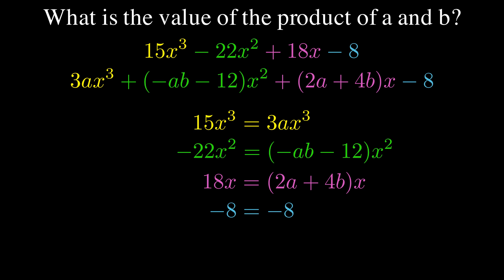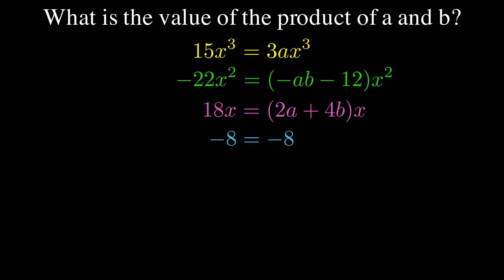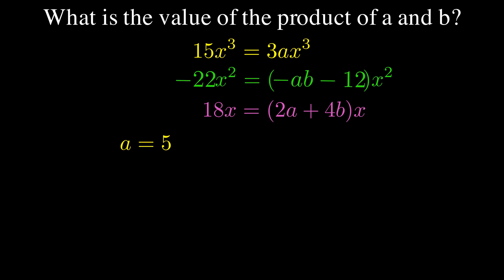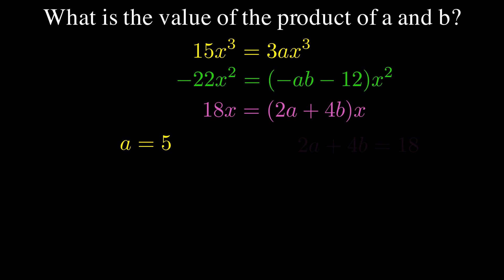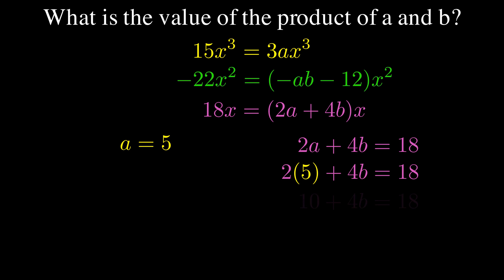Now, negative 8 equals negative 8 isn't super interesting — we all know that's true — so I'm going to go ahead and erase that because it's not going to be helpful to us. Of the three remaining equations, the one in yellow is the one where I only have one constant, so I can pretty easily figure out what A is by setting those equal to each other. For the green and the purple, I have two constants, so I need to decide which one looks easier. Since I've already solved for A, I can plug it in and simply go through the steps of solving for B. When I do this, it looks like B is equal to 2.